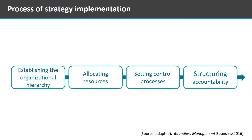The process of strategy implementation can be presented as follows. The first step is establishing the organisational hierarchy. The second is allocating resources. The third, setting control processes. And the fourth, structuring accountability.